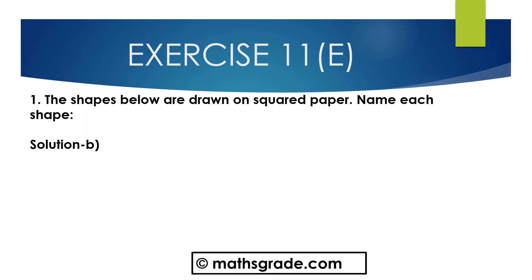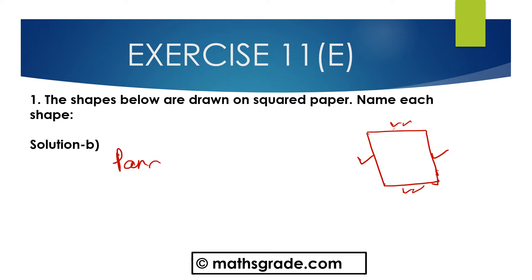Now second, part B. This shape is given and this is the shape of a parallelogram. In a parallelogram, all opposite sides are equal — these two sides and these two sides are equal — and these angles are not equal to 90 degrees. So this is the shape of a parallelogram.